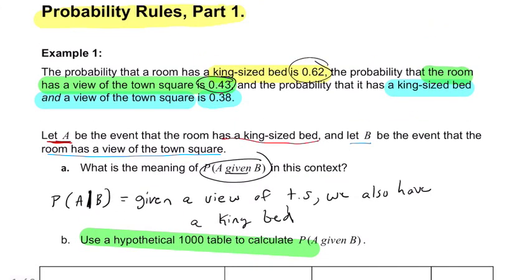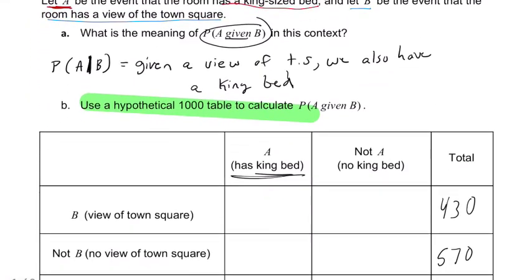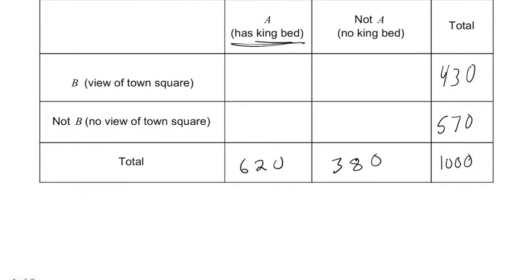And then we're given one more probability that it has a king size bed and a view. So we got both here. We got the king bed, yay, and the view. They meet here in this spot, this intersection. So that's the probability we're talking about, and that's 380. 240 goes here. 380 plus 240 is 620. Looks like a negative number. I don't want that. 50 goes here because 380 plus 50 is 430. And 330 goes here because 330 plus 240 is 570.